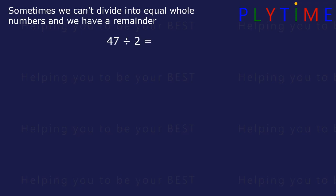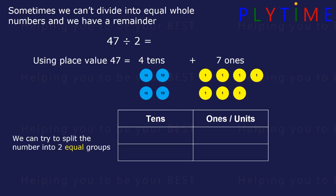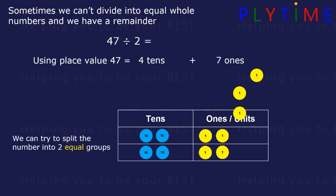47 divided by two. Using place value, 47 is the same as four tens plus seven ones. And we can try to split that number into two equal groups. If we split the tens, and then try and split the ones. We have one remaining, and we'd have to split that in half to keep the two groups equal.